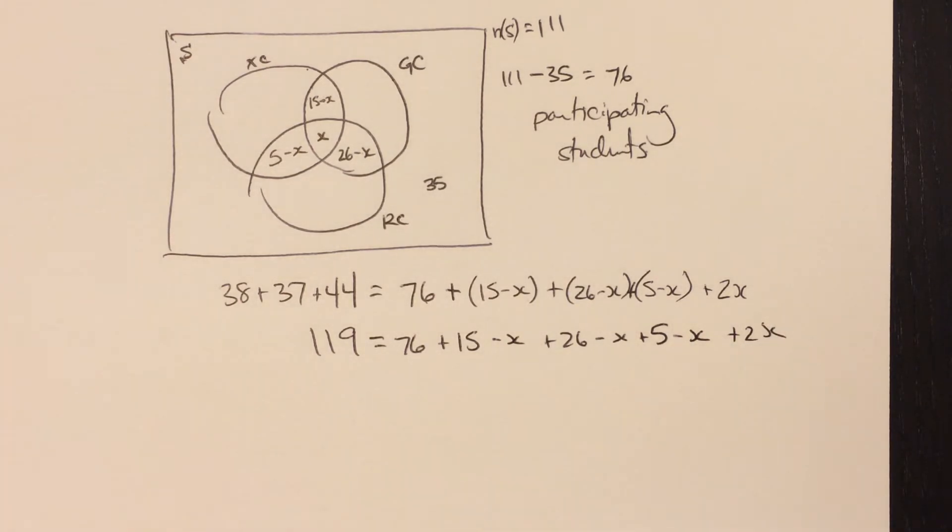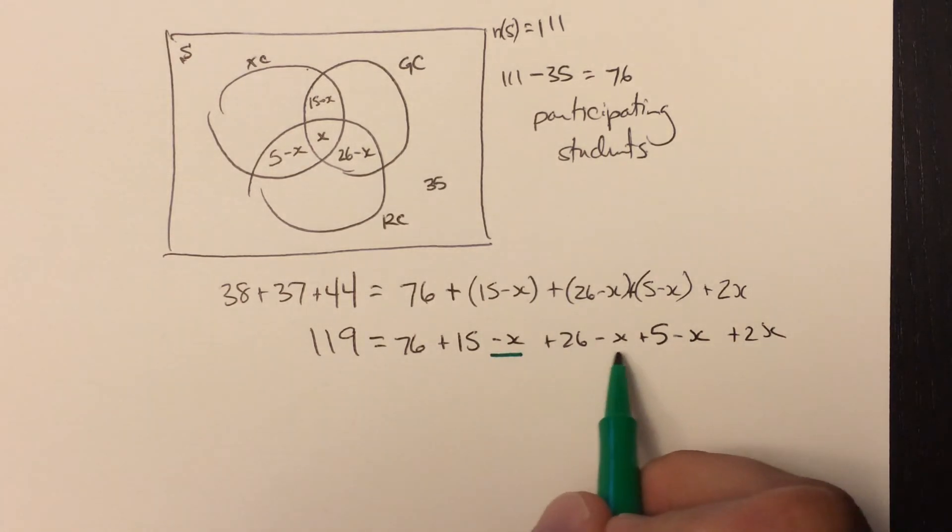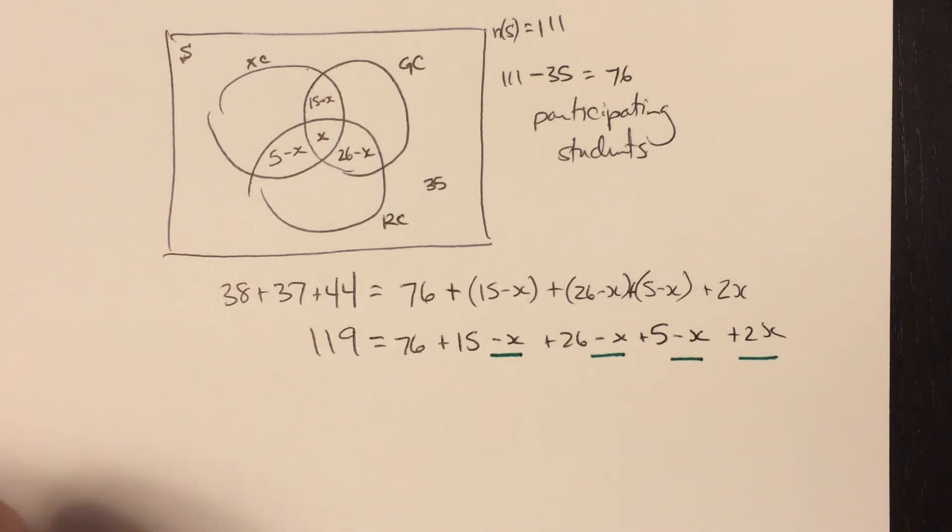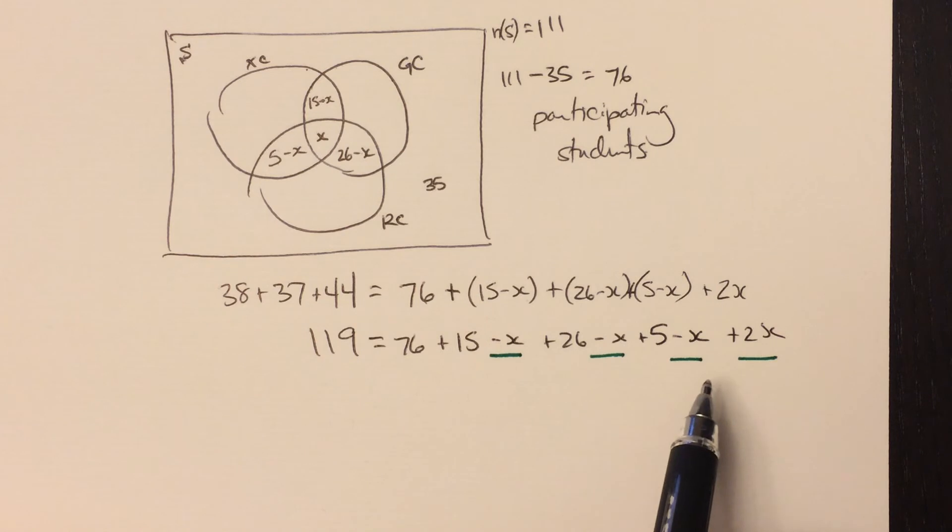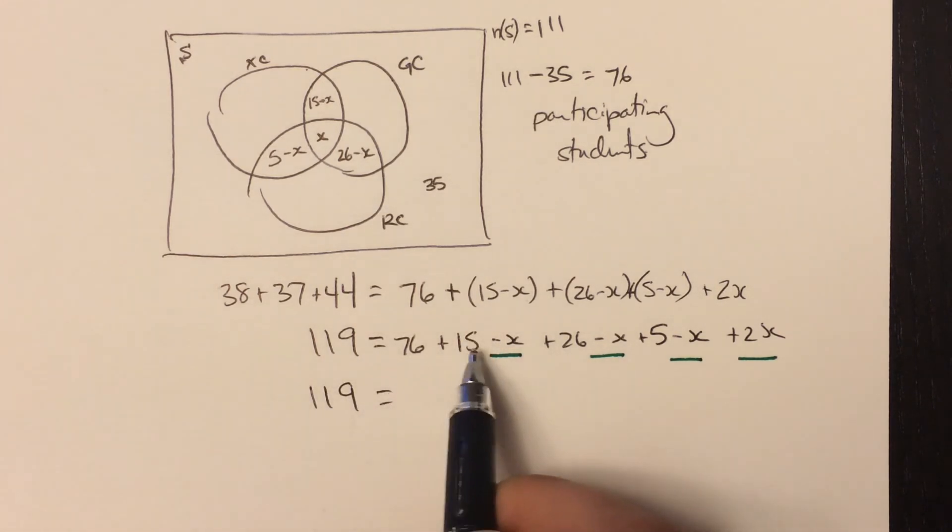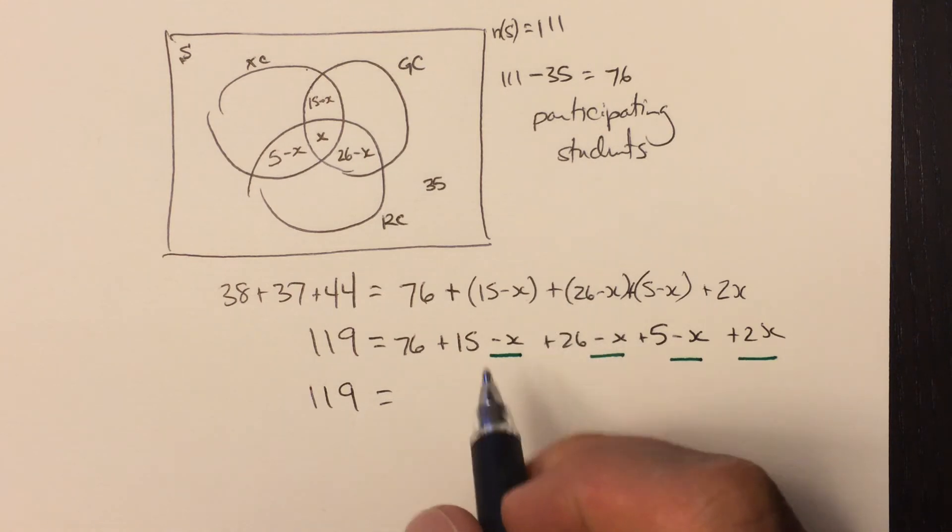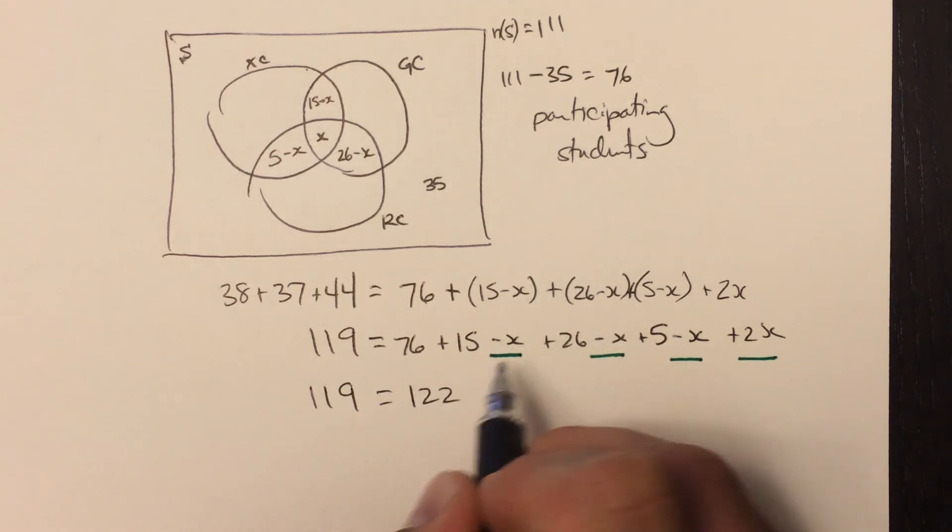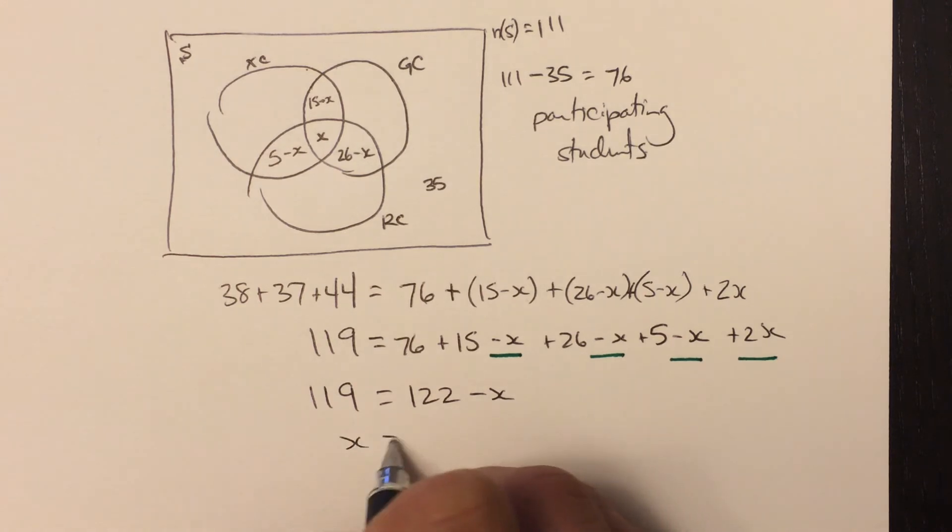Let me grab a color here for a second and show the X's. There's a minus X, minus X, minus X, and a plus 2X. So that, the net of all that is a negative X, right? So that's 119. And then when you add these other constant values up, you're going to get 122. We have a minus X as our net. Rearrange that. And we get X equals 3.